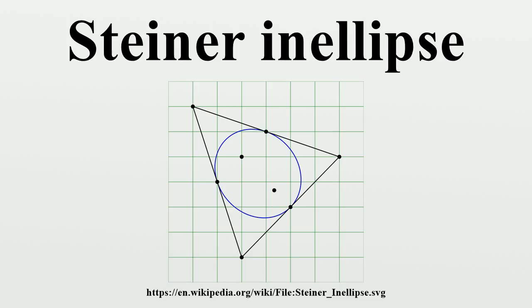The Steiner ellipse is the only inconic that is tangent at the midpoints of two of the triangle's sides. That is, if an ellipse is tangent to the triangle at two sides' midpoints and also tangent to the third side, then the latter point of tangency is the midpoint of that side.